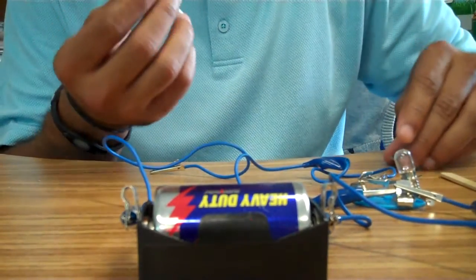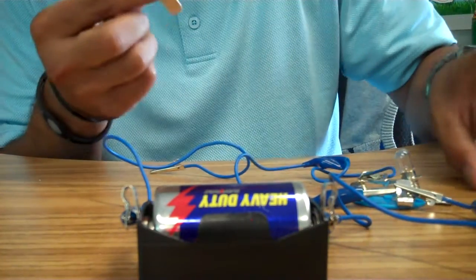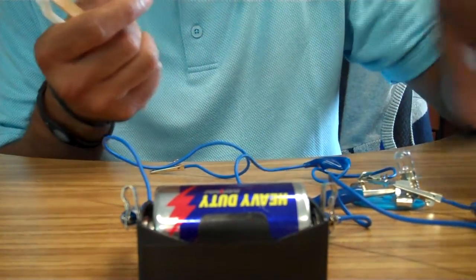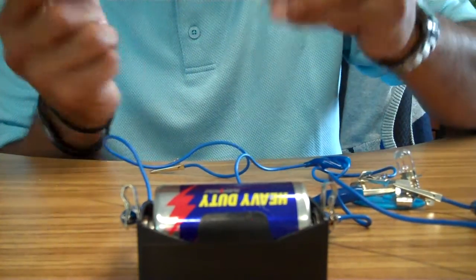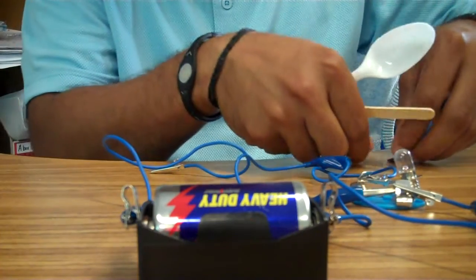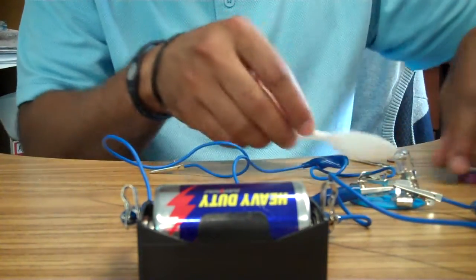Some of the items I have are a spoon, a nickel, an ice cream stick, a rubber band, an aluminum foil, a magnet, a paper clip and a penny, a copper coin. We are going to test whether these items conduct electricity or not.